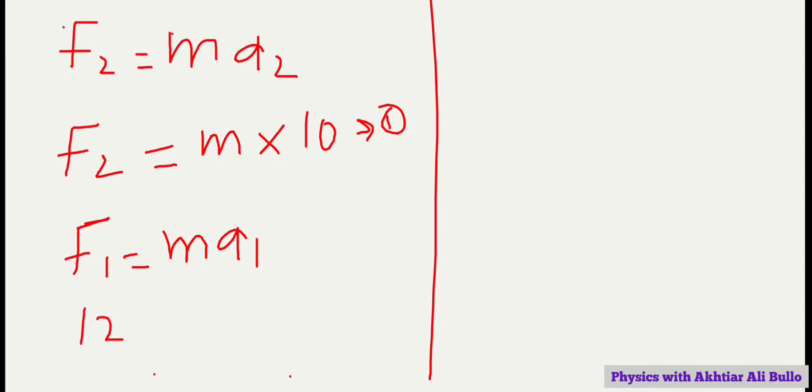12, F1 ki jaghe par put karenge. We have to find m, and a1 ki jaghe par hum 4 put karenge. So we have to find mass, so m will be equal to 12 upon 4. We will obtain mass is 3 kg.